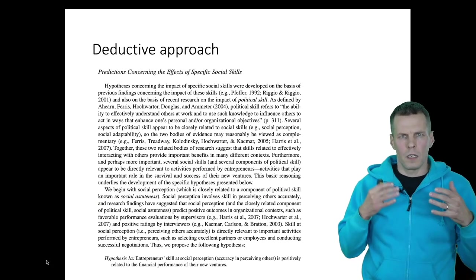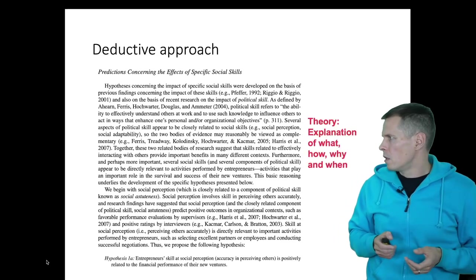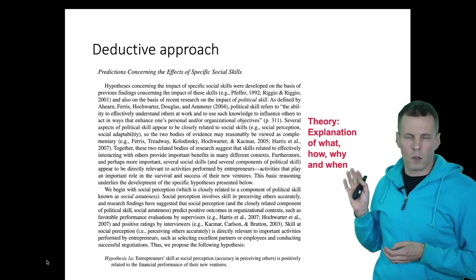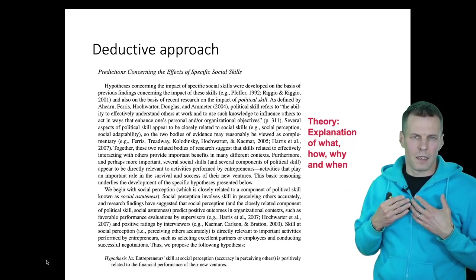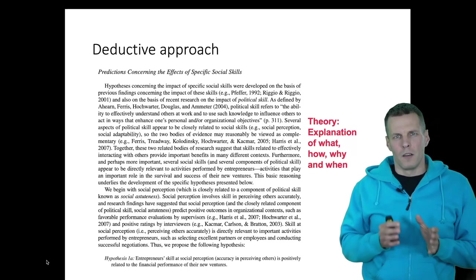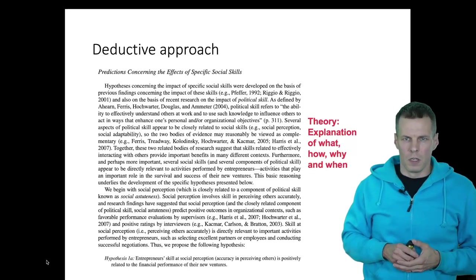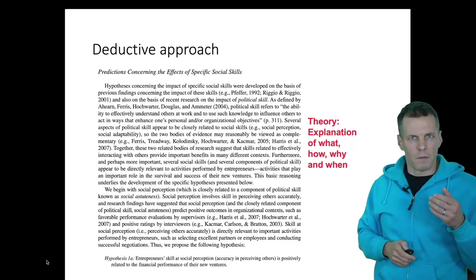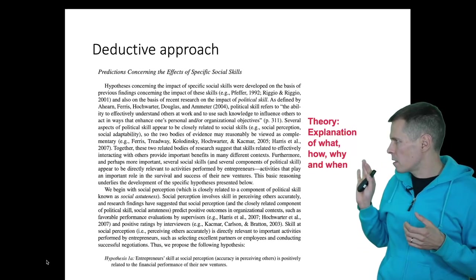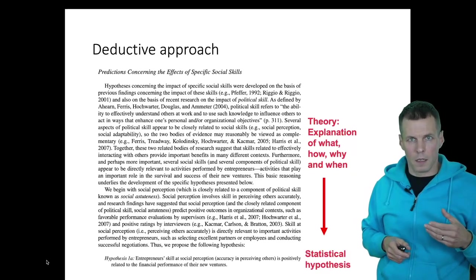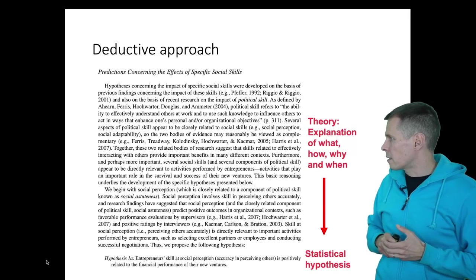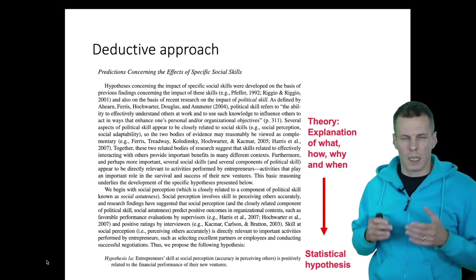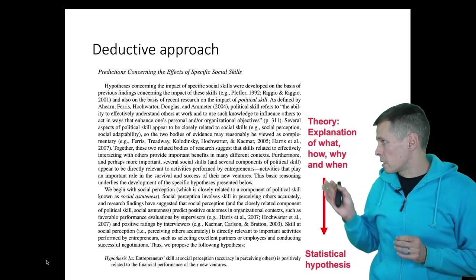This is a deductive study. The idea of a deductive study is that you first present a theory. Here the theory is about specific social skills — specifically social perception, which they define as a person's ability to sense or perceive how others are affected in a social situation. Then they have a theory of why that might affect an entrepreneur's performance, and from that theory they derive a hypothesis. The idea is that if this theory is correct, this statistical hypothesis should hold: entrepreneurial social skills, specifically social perception accuracy in perceiving others, is positively related to financial performance in new ventures.